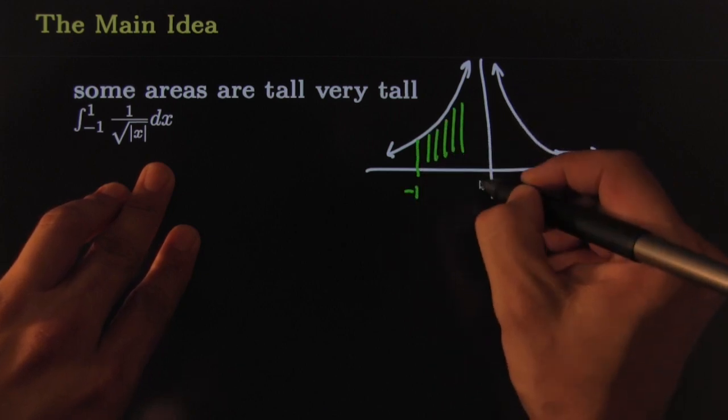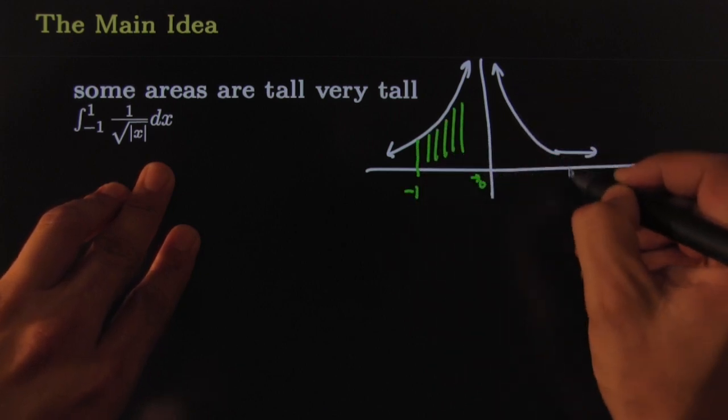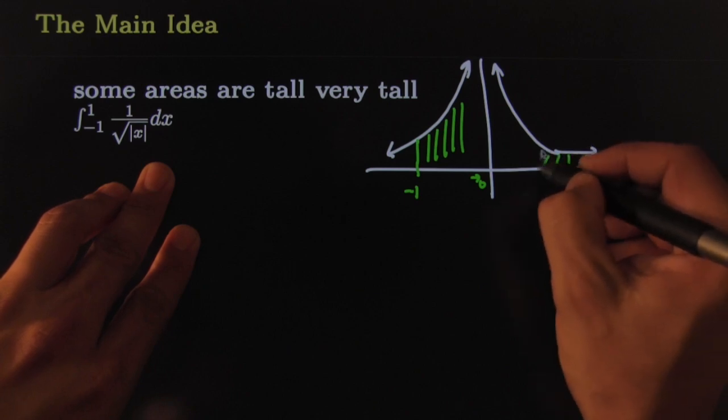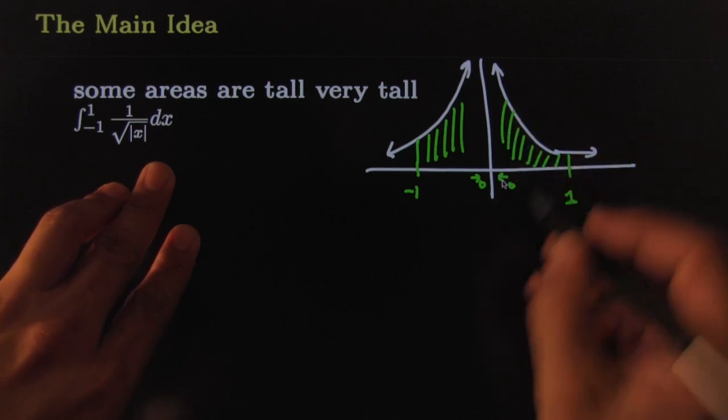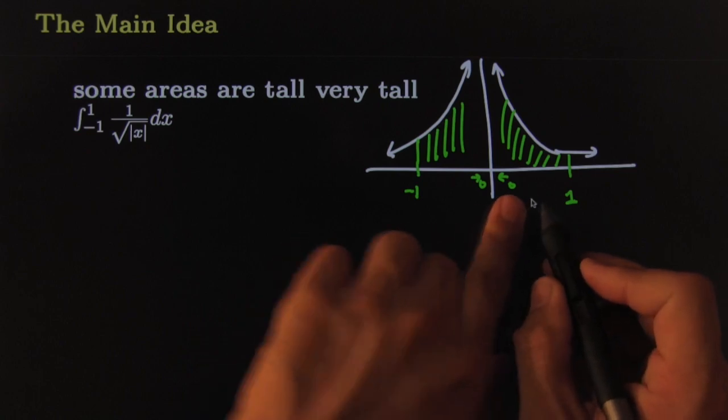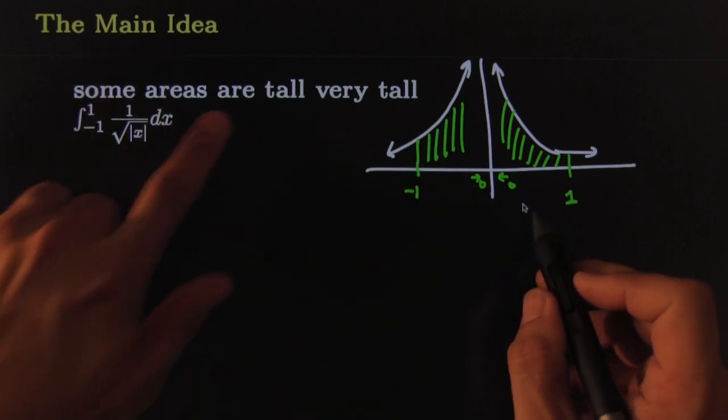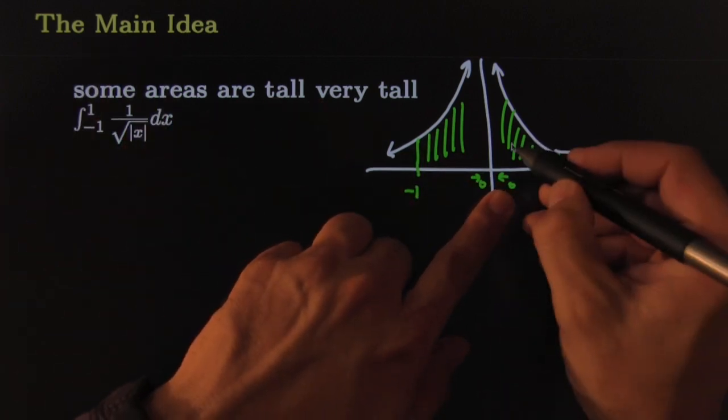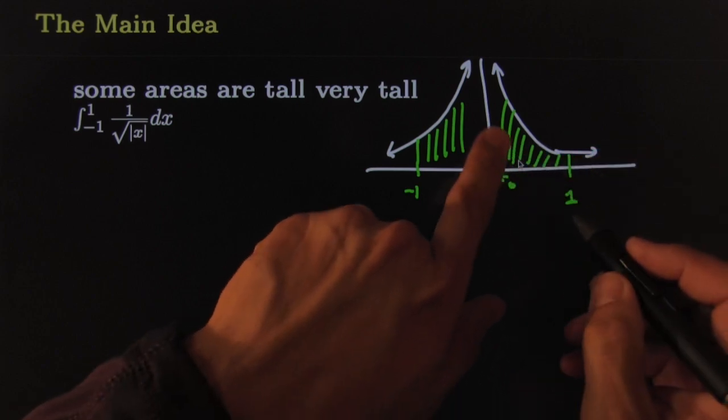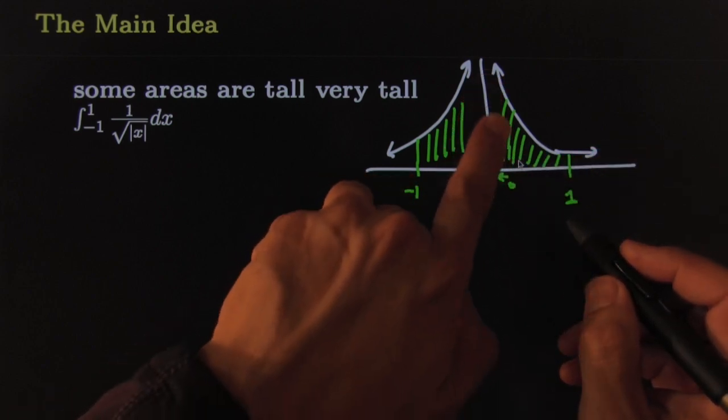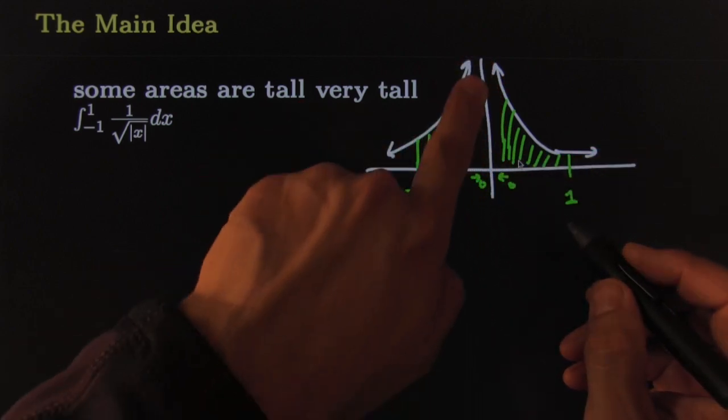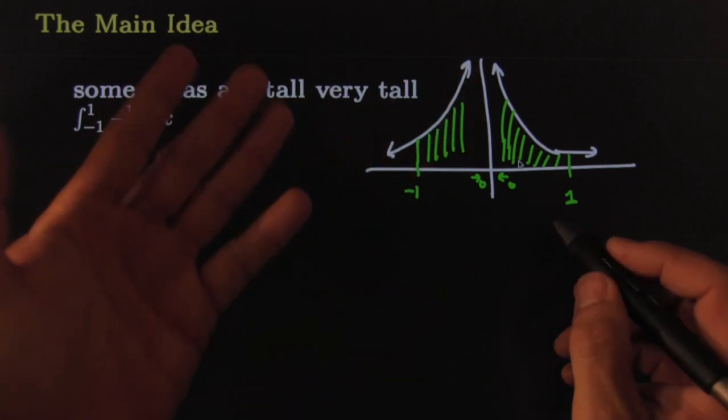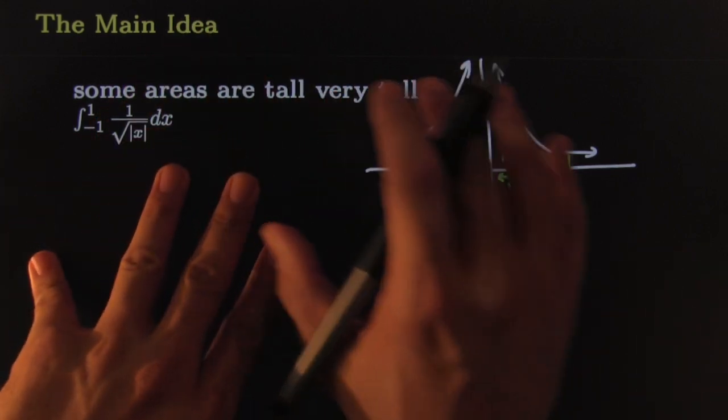We're attempting to find the area from negative 1 all the way to 0 on this side and also from positive 1 all the way to 0 on that side. Here's the main idea illustrated again: some areas are very very very tall. You might be concerned that this is getting really really really tall and so maybe the area that fits in this little wedge here is infinite, and same thing on the other side. Maybe, maybe not.